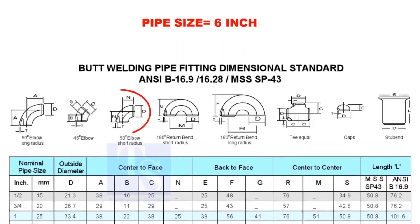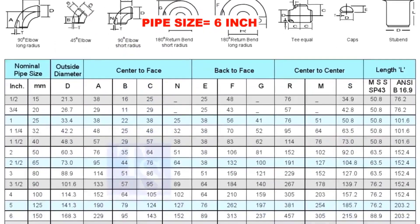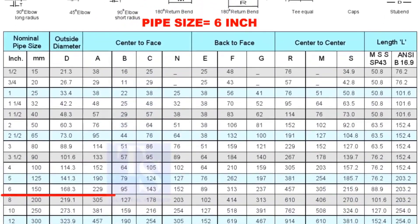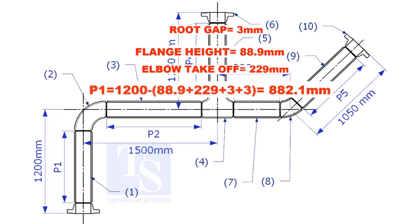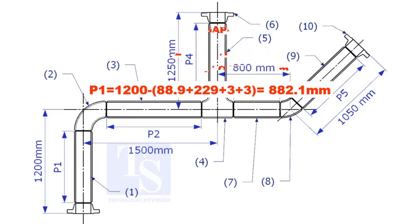Check the take-off length of the elbow. It is 229mm. Assume the root gap is 3mm. Substitute the sum of the height of the flange, elbow take-off, and two root gaps from the total length of 1500. Length of pipe P1 is 882.1mm.